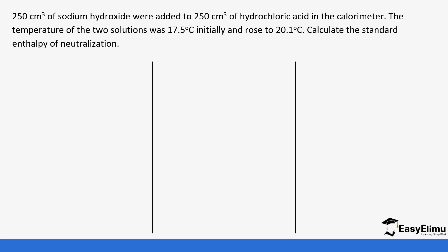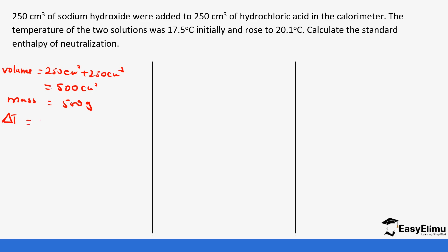For the final example: 250 cm³ of sodium hydroxide is added to 250 cm³ of acid, giving a total solution volume of 500 cm³ and therefore a mass of 500 grams. In the calorimeter, the temperature of the two solutions started at 17.5°C and rose to 20.1°C, giving a temperature change of 20.1 − 17.5 = 2.6°C.